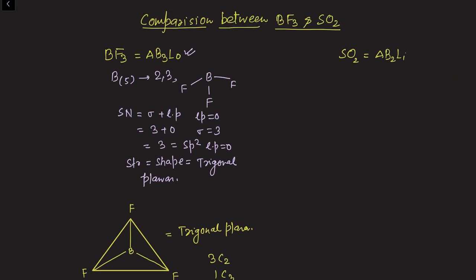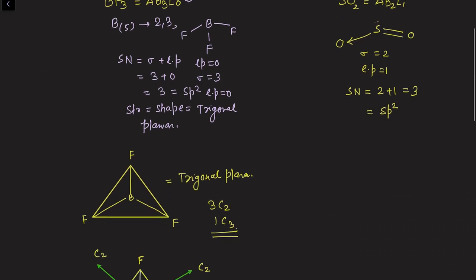Now for sulfur dioxide: checking the Lewis dot structure, the number of sigma bonds is 2 and lone pairs is 1, so the steric number is 2 plus 1 equals 3. The hybridization of this molecule is also sp2. We know sp2 gives a trigonal planar structure, but because of the presence of a lone pair of electrons, the shape of SO2 will not be equivalent to trigonal planar.